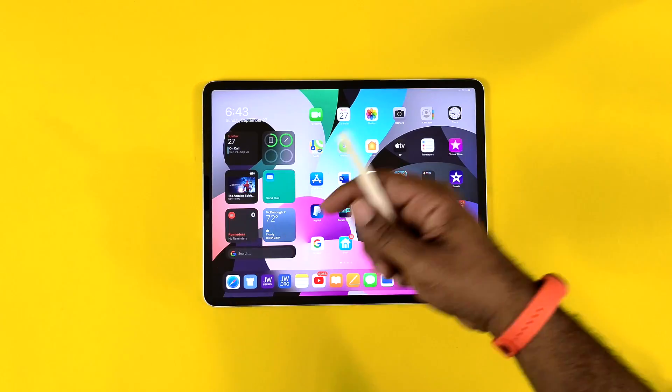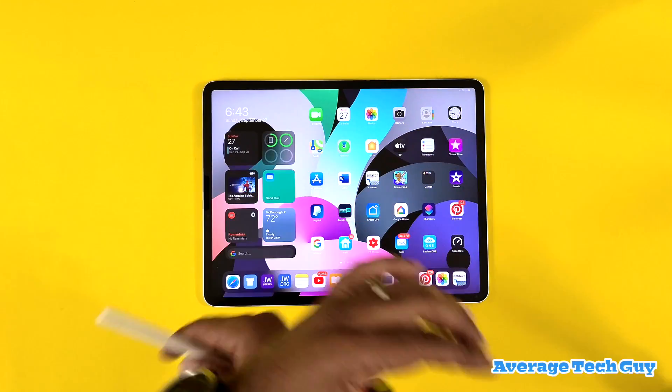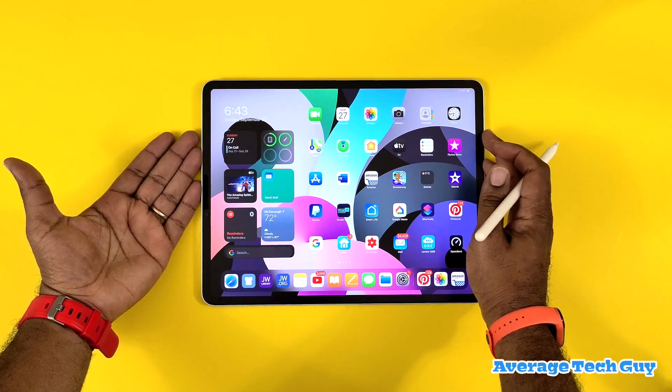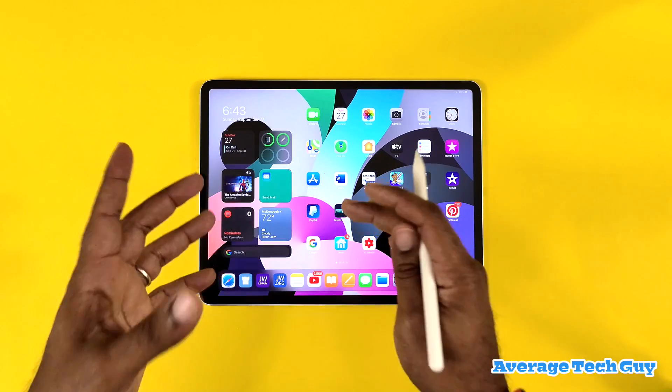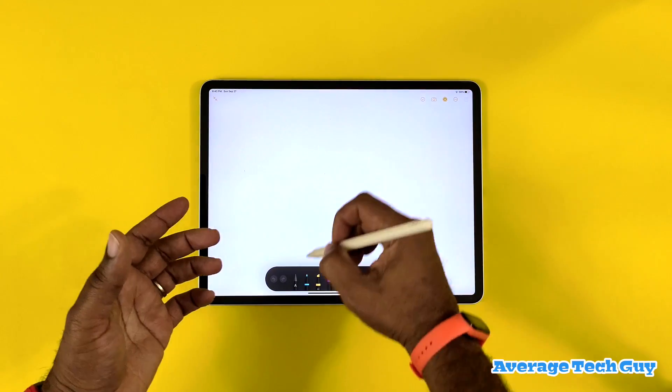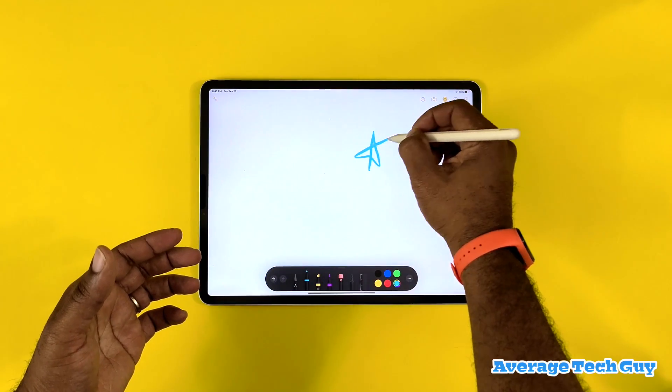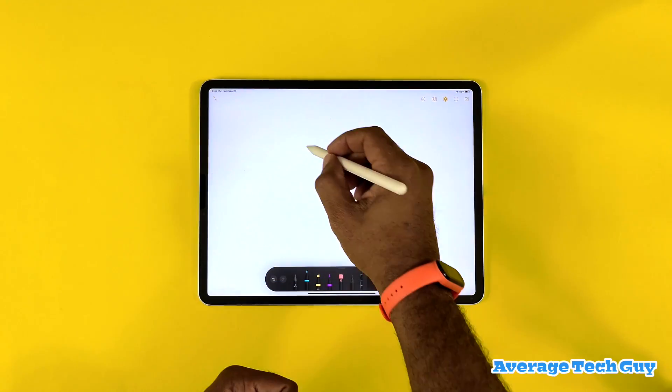What's going on, Average Tech Guy here. Today we are back with more tech and reviews, and we just got our hands on iOS 14. A lot of people were asking me questions about these shapes. In iOS 14, you can actually draw shapes and they turn into what you want them to turn into. You draw a star, it turns into a star. You draw a circle, it turns into a circle.